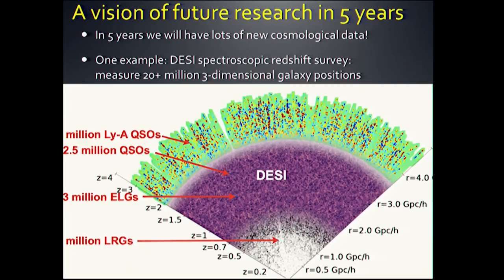To give you an idea: today we can do with BOSS up to redshift 0.7 — that's the white and black area. But with DESI we'll be able to go up to redshift 2 with emission-line galaxies, and with quasars we can go even further. So we'll measure tens of millions of galaxy positions.